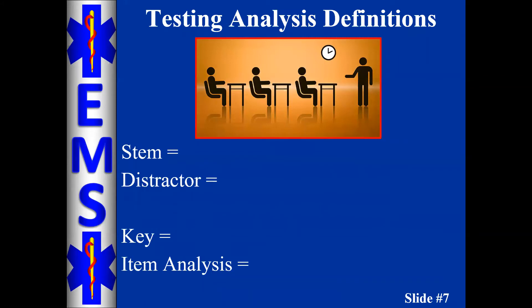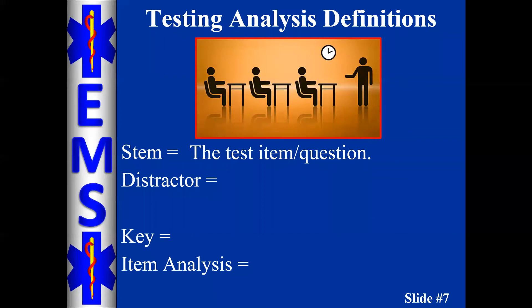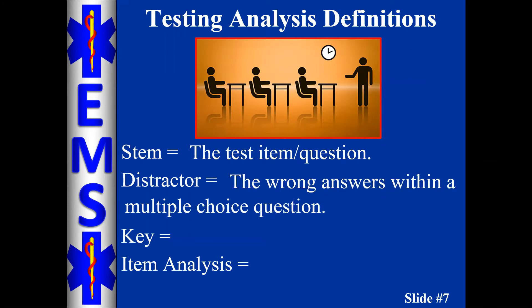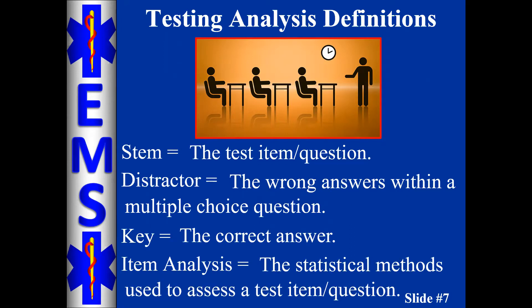Before we jump in, let me cover a couple of definitions so we're on the same page. The STEM is the actual question being asked. The distractors are the wrong answer choices within a multiple-choice question, and the key is the actual correct answer we want students to identify. Item analysis comes in many forms and methods, but for our purposes it is the statistical method we use to validate or invalidate questions within our formative events.